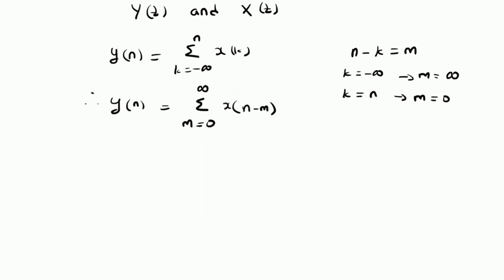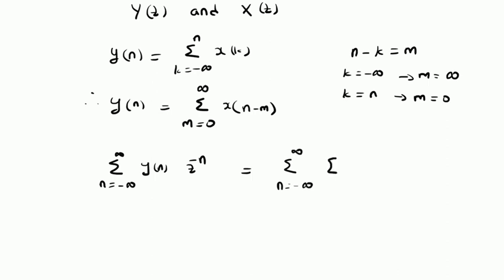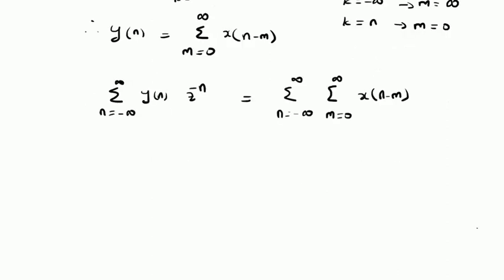Now, we can apply the Z-transform on both sides. On the left side, we have summation n is equal to minus infinity to plus infinity of y of n times z power minus n. Clearly, the summation on the left side is the definition of the Z-transform of y of n, so it is indeed Y of z.